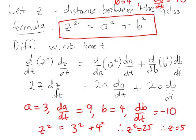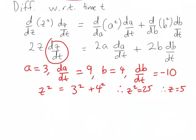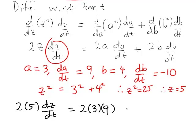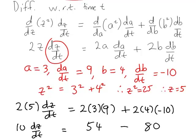So we now have all the information except dZ/dT, which is what we actually want. So let's sub in what we do know. So we've got two lots of Z. So two times five times dZ/dT equals two lots of A. So two times three, dA/dT, which is nine, plus two times four for B times negative ten for dB/dT. And that just becomes 10 dZ/dT is equal to 54 minus 80 when we work this out.